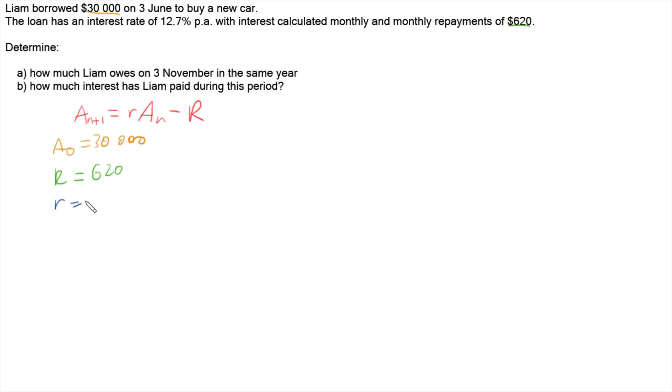Little r is given by the rule 1 + i, where i is our interest rate per period. So our interest rate is 12.7% per annum, which we need to convert into a decimal by dividing by 100. And then we also need to convert it into monthly periods. So we've got to divide by how many times it happens per year, 12 months in a year, so we divide by 12.